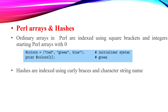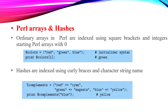Hashes are indexed using curly braces and character strings. The percentage sign creates a hash table. For example: %complements = ('red' => 'cyan', 'green' => 'magenta', 'blue' => 'yellow'). Then print $complements{'blue'}. The output is yellow. You can use a hash table in Perl scripting language.